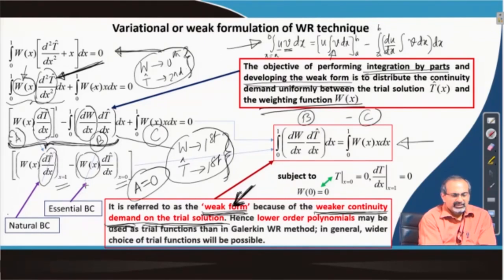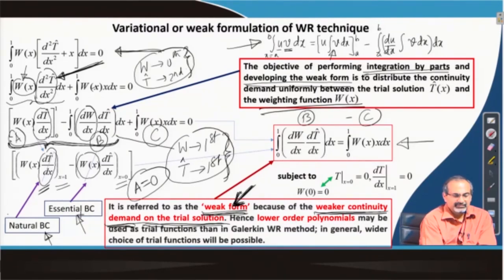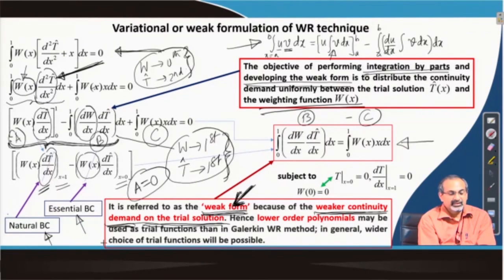When we impose boundary conditions involving derivative terms — such as those that appeared in the term a from integration by parts — we generally call them natural boundary conditions. When we set the values of the dependent variables to 0, then we call them essential boundary conditions.